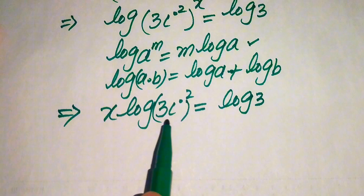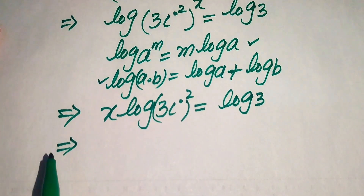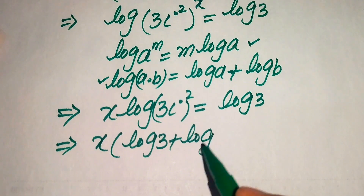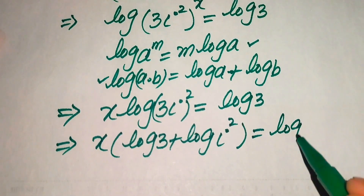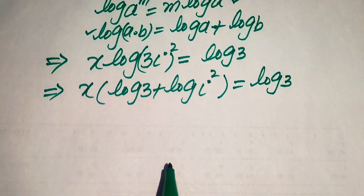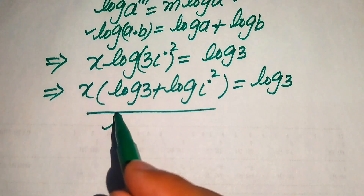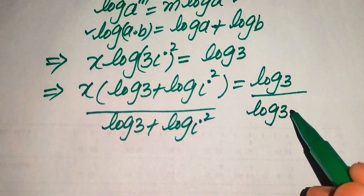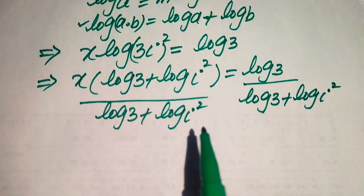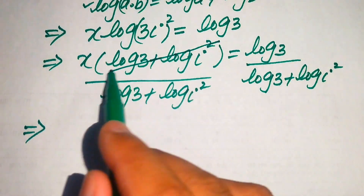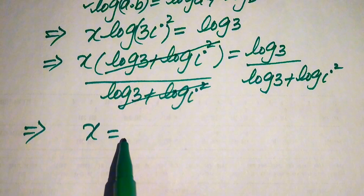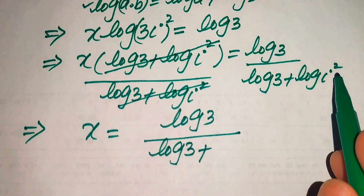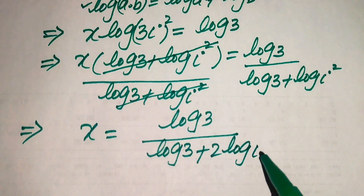Since we have two numbers multiplied inside the log, we apply the product property: x times (log 3 + log iota²) equals log 3. To solve for x, we divide both sides by (log 3 + log iota²). The terms cancel on the left side, and we move the exponent 2 to the front of the log, giving x equals log 3 divided by (log 3 + 2·log iota).